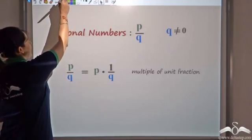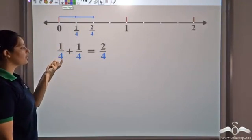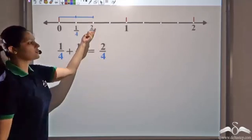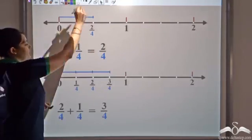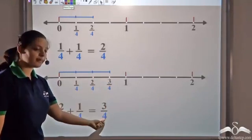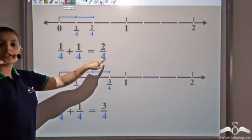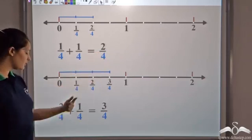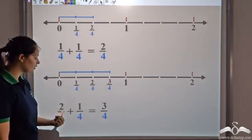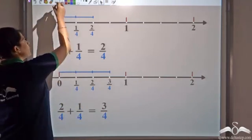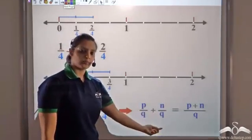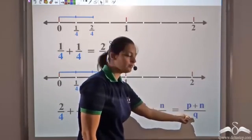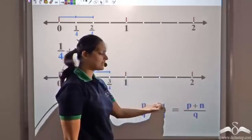Let us see how we add rational numbers. We had seen that 1/4 added 2 times: 1/4 plus 1/4 gives 2/4. Similarly, if I add another 1/4 to 2/4, I get 3/4. So what is happening is that the denominator is not changing and the numerators are getting added: 1 plus 1 is 2, denominator stays. Then 2 plus 1 is 3. So if two rational numbers have the same denominator q, the denominator remains the same and the numerators get added: (p + n) by q.